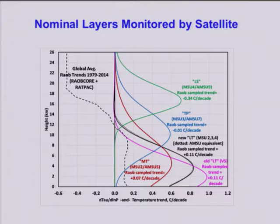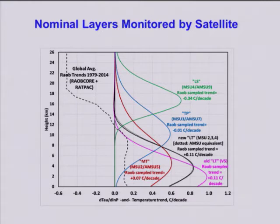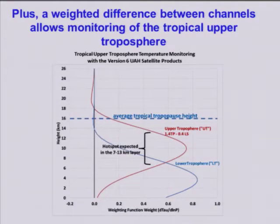These are deep layer temperatures. That dashed curve shows the vertical profile of temperature trends from weather balloons — showing stratospheric cooling up above and warming down below, with fairly uniform warming with height.